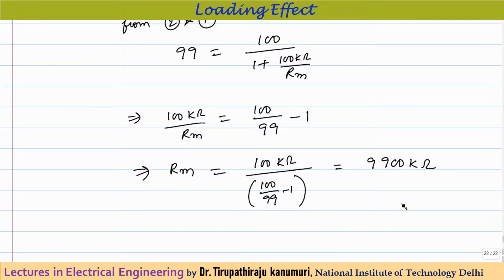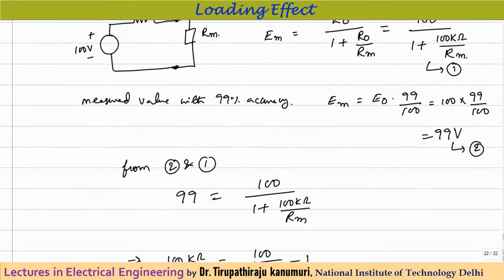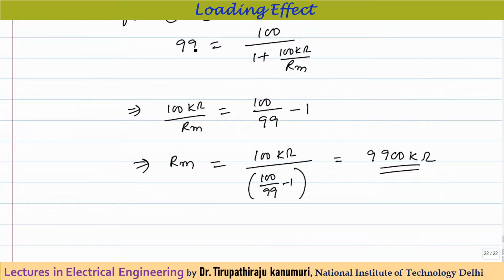Calculating this gives Rm = 9900 kilo-ohms. Notice the instrument impedance must be 9900 kΩ — nearly 99 times the source impedance of 100 kΩ — to achieve 99% accuracy. For 100% accuracy, the instrument impedance would need to be infinite.